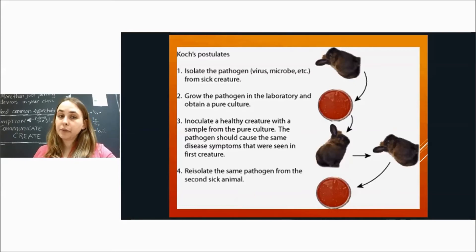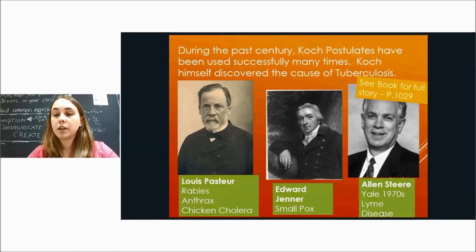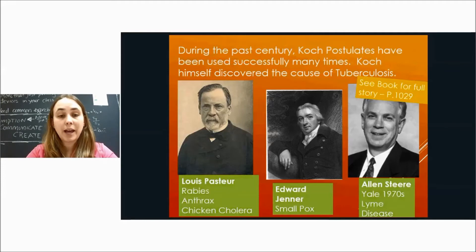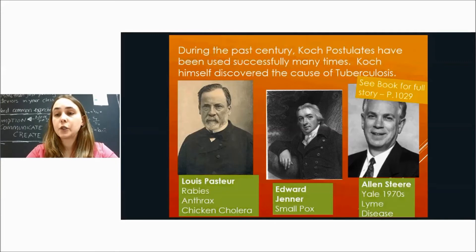Once he had a pure culture, he inoculated a healthy organism with it to see if they got anthrax. If they did get sick, he re-isolated that bacteria, swabbed it, and regrew the same bacteria to confirm it was the cause. Koch's postulates have been used successfully many times: Koch himself discovered the cause of tuberculosis; Pasteur used them to discover the causes of rabies, anthrax, and chicken cholera; Edward Jenner used them to study smallpox; and Alan Steer used them in the 1970s at Yale to identify the bacteria that causes Lyme disease. Steer is still living and working, believed now at Harvard, studying Lyme disease and Lyme arthritis.